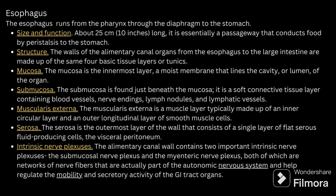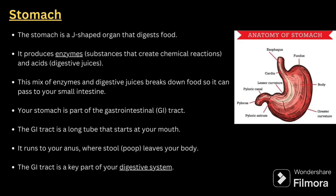The esophagus runs from the pharynx through the diaphragm to the stomach. When talking about the esophagus you have to mention its size and function. It is about 25 centimeters long, essentially a passageway that conducts food by peristalsis to the stomach. Regarding its structure, the wall of the alimentary canal organ from the esophagus to the large intestine is made up of the same four basic tissue layers, or tunics, including mucosa, submucosa, and others.